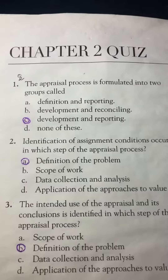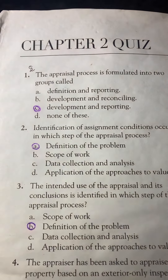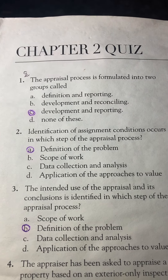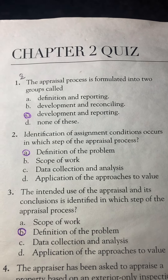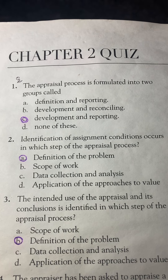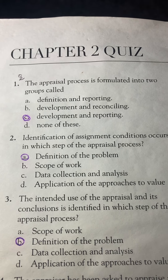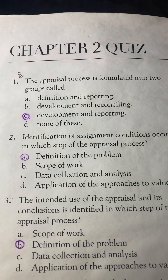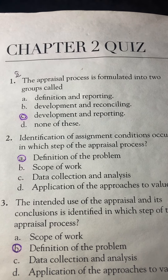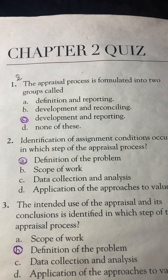Number 1. The appraisal process is formulated into two groups called: A. Definition and Reporting, B. Development and Reconciling, C. Development and Reporting, D. None of these. The answer is C: Development and Reporting.